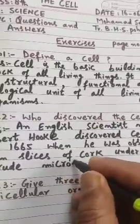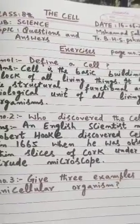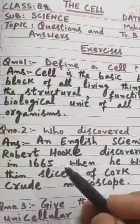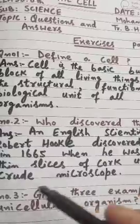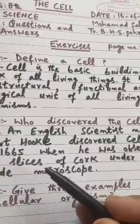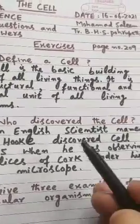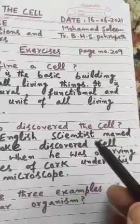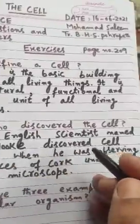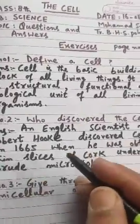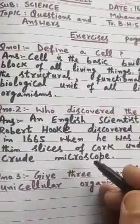An English scientist named Robert Hooke discovered a cell in 1665 when he was observing thin slices of cork under his crude microscope. This was a crude microscope, different from today's microscopes — this was about 300 years ago.